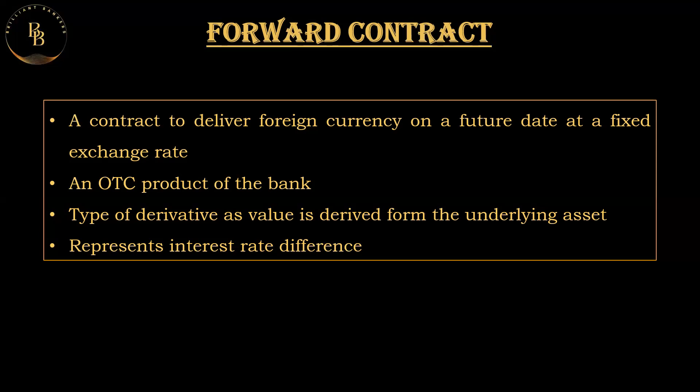Key features of a forward contract: the terms — price and delivery date — are negotiated between the two parties, generally an individual and the bank. There is no intermediary; it is a private agreement traded over-the-counter. Both parties are obligated to fulfill the terms on the agreed-upon future date. In simple terms, a forward contract is like making a deal today to buy or sell something in the future at a price you agree upon now.